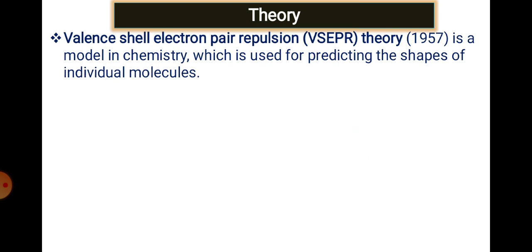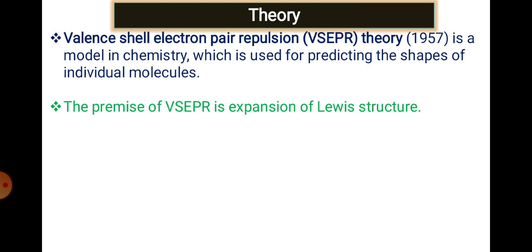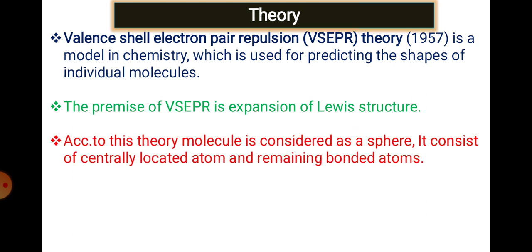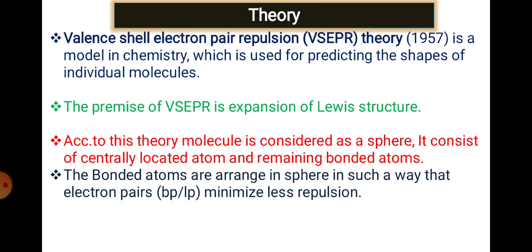VSEPR theory was developed in 1957. It is a model, just like Lewis dot model, and can be called an expansion of that. According to this theory, a molecule is considered as a sphere with a centrally located atom, and the remaining atoms are bonded to the central atom. The bonded electron pairs are arranged to minimize repulsion — they should be as far apart as possible. If lone pairs are present, they occupy more area and push bond pairs closer together.